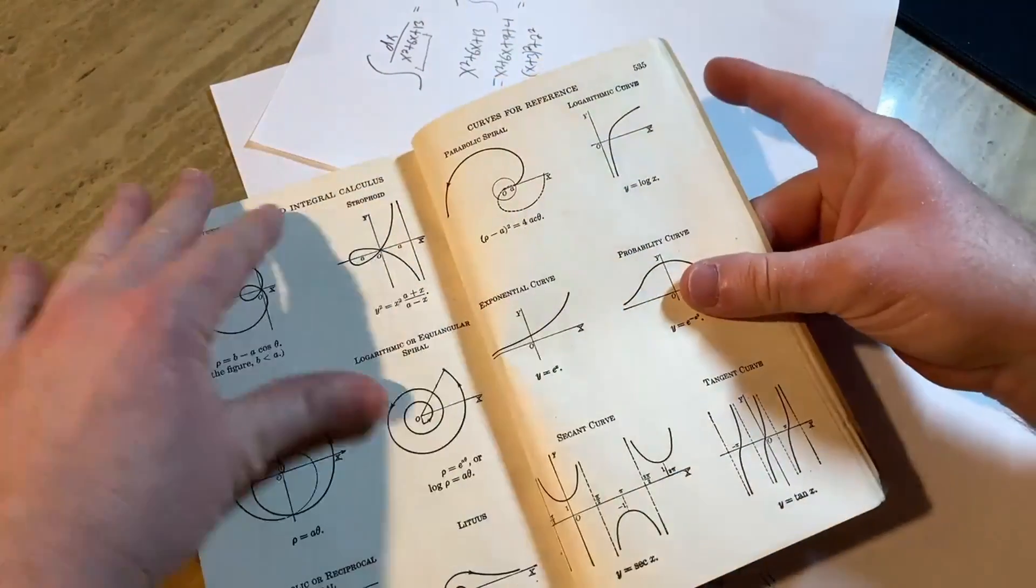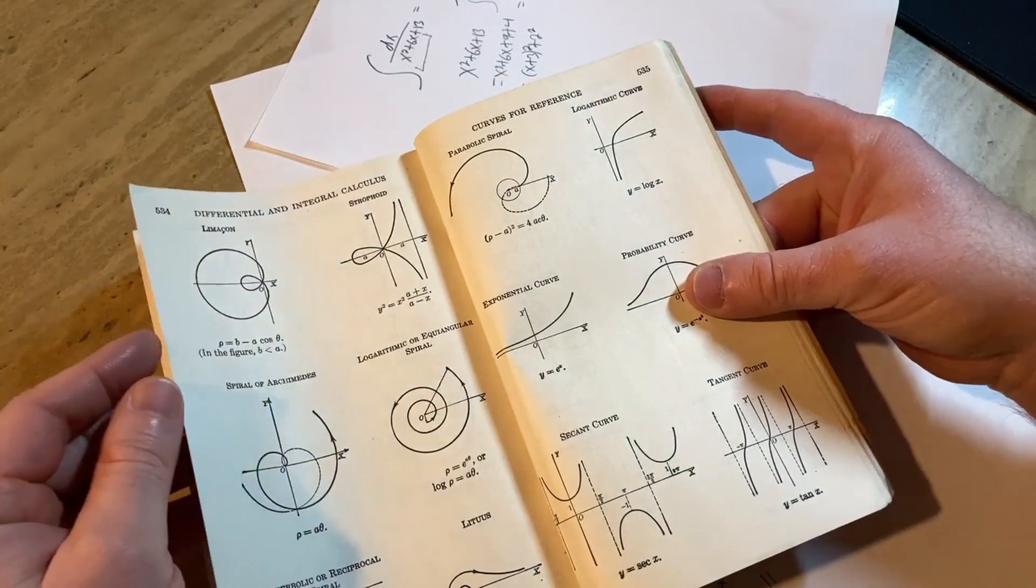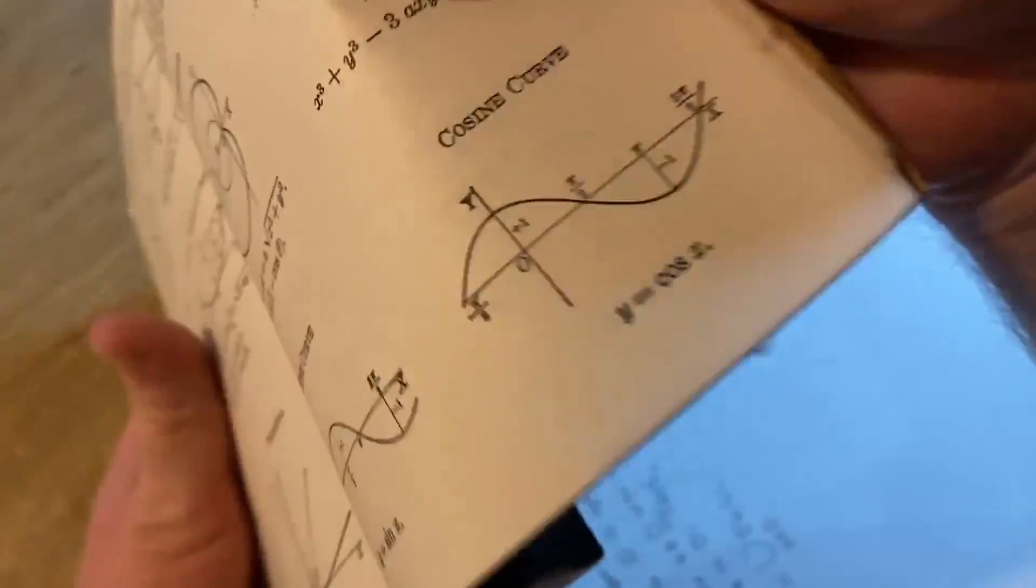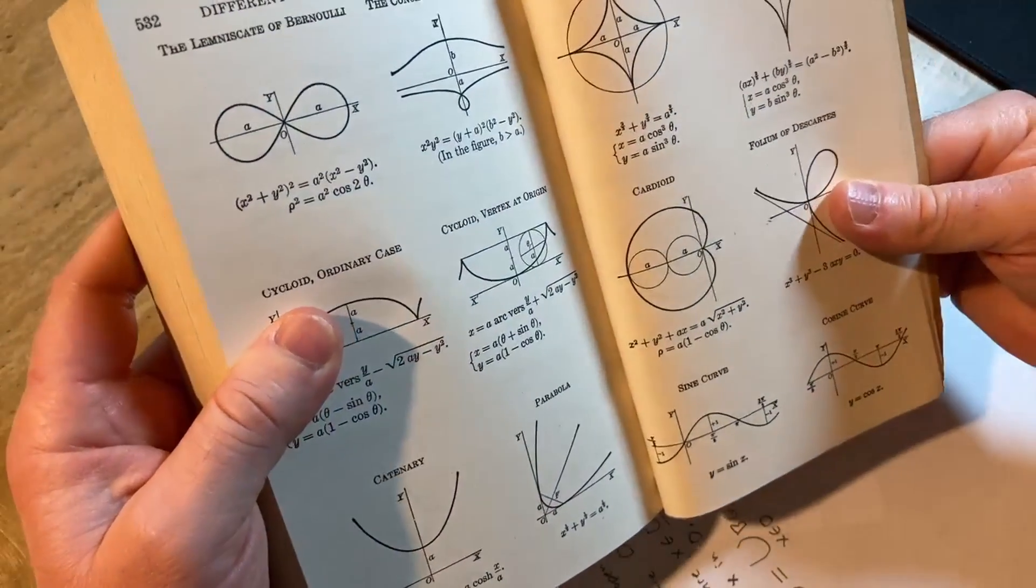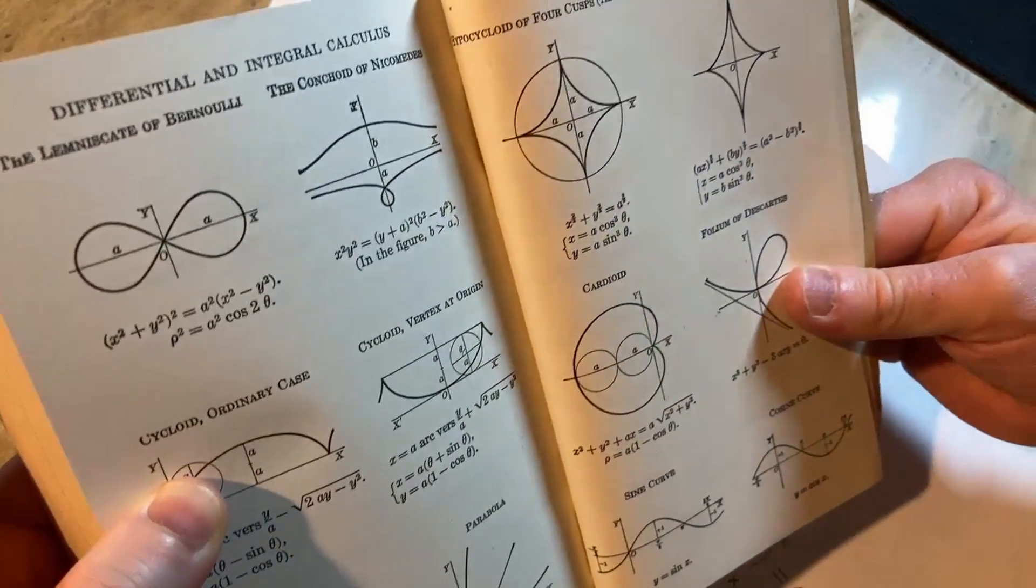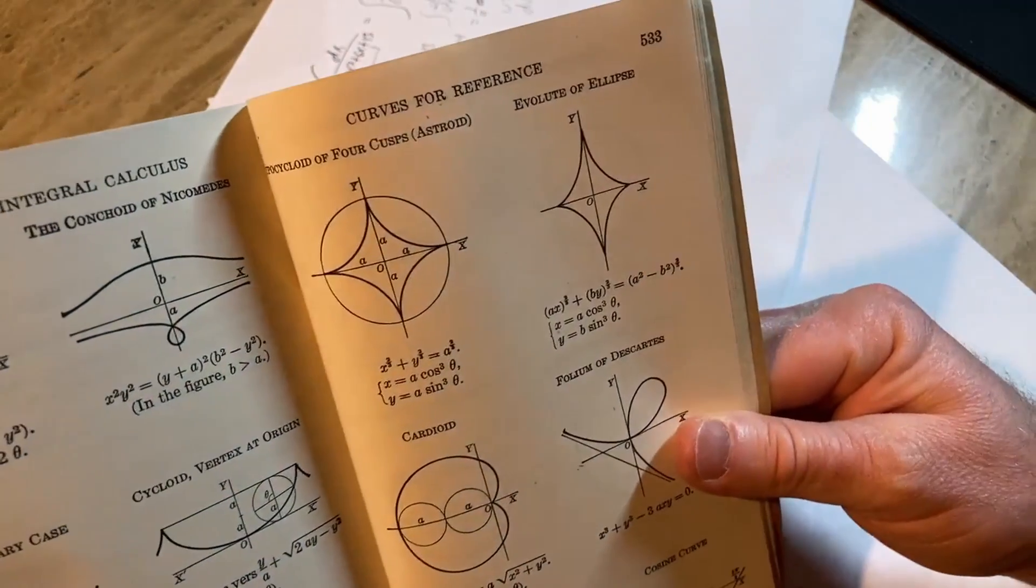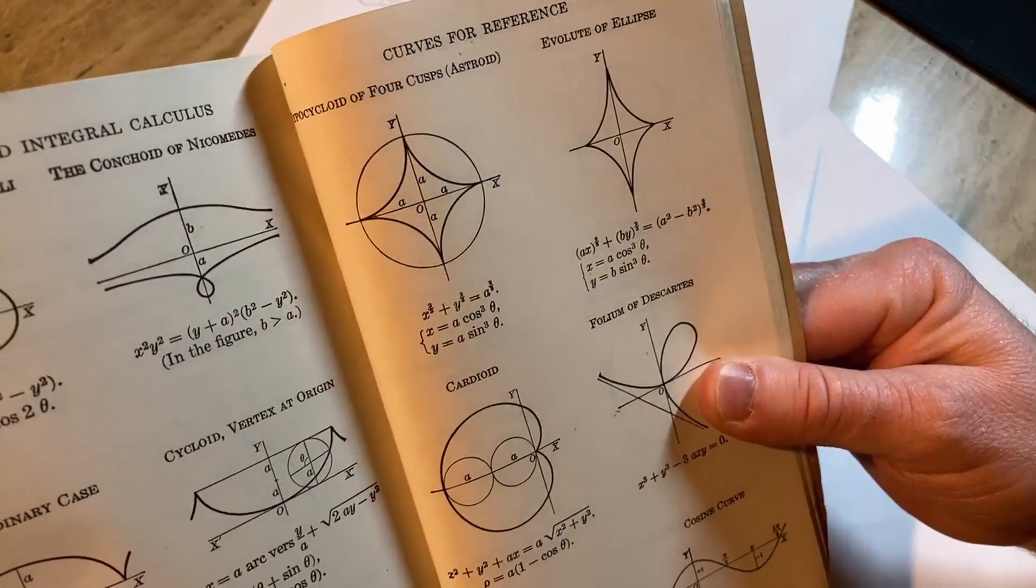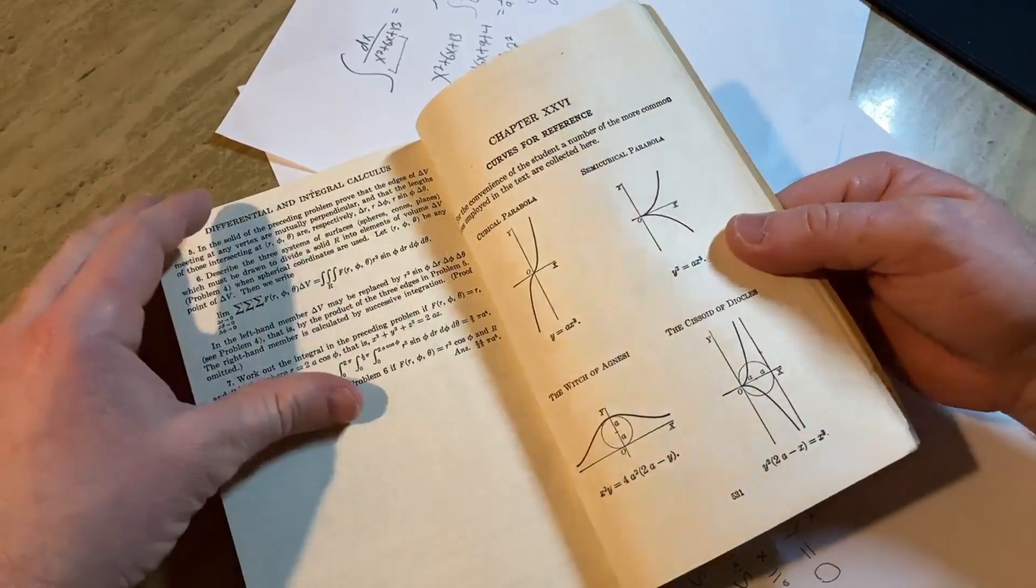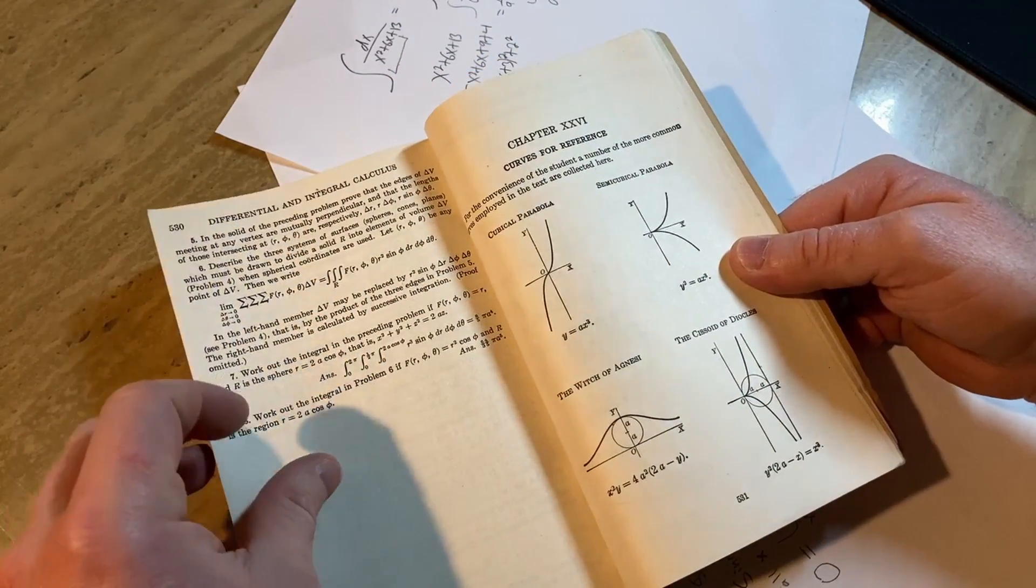And then there's all these graphs. Look at this. Like wow. Curves for reference. Like yeah just in case you need to know. You're working through the book and like oh that's a cycloid. Vertex at origin. Ordinary case. Very nice. Really interesting. Curves for reference.